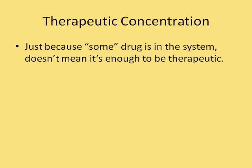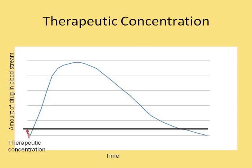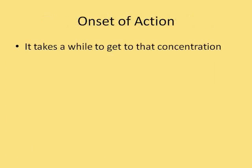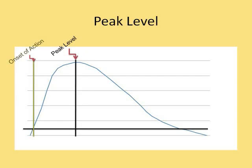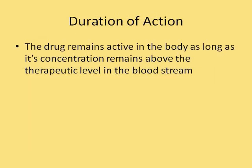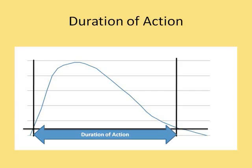Just because some of the drug is in the system doesn't mean it's enough to be therapeutic. The concentration of the drug in the blood needs to reach a certain level before you'll see a therapeutic response. From the time the client takes the drug until we start getting a therapeutic response is called the onset of action — when the drug finally reaches that therapeutic level. The drug continues to increase until it reaches a peak level, and it remains active as long as its concentration stays above that therapeutic level in the bloodstream.